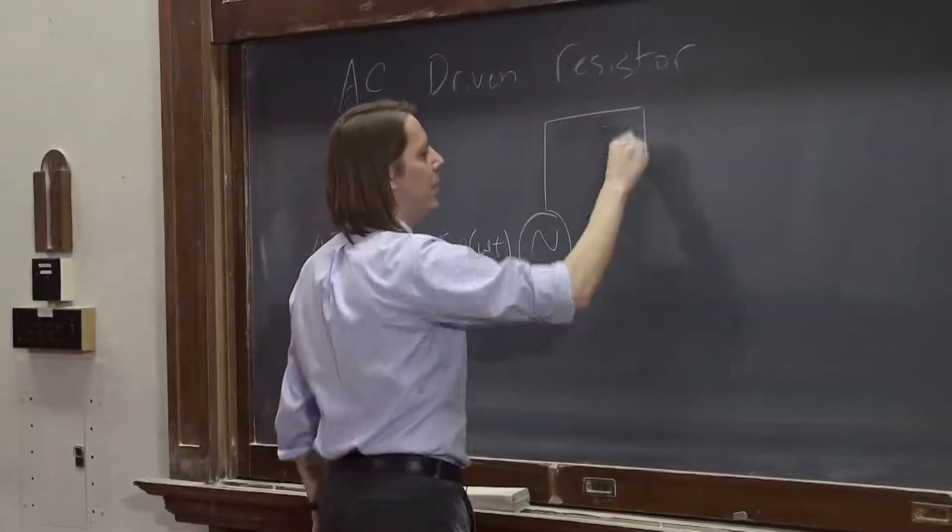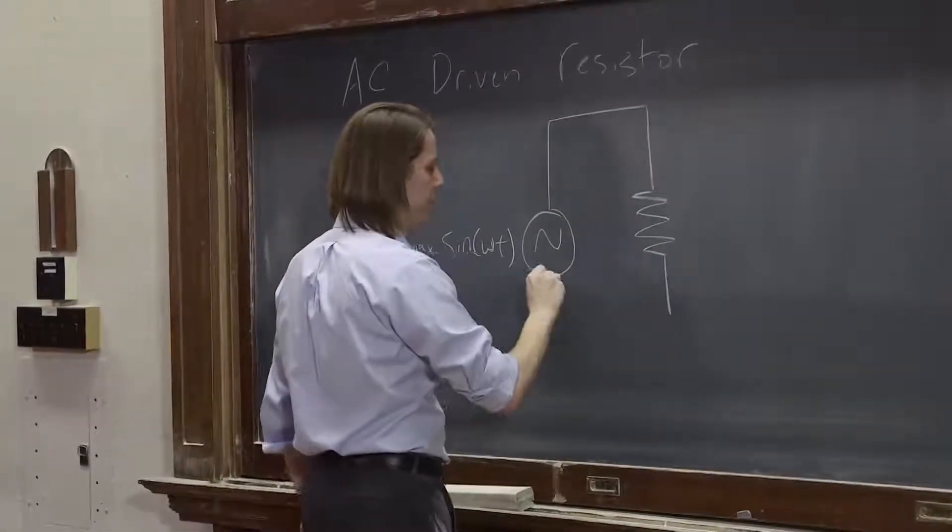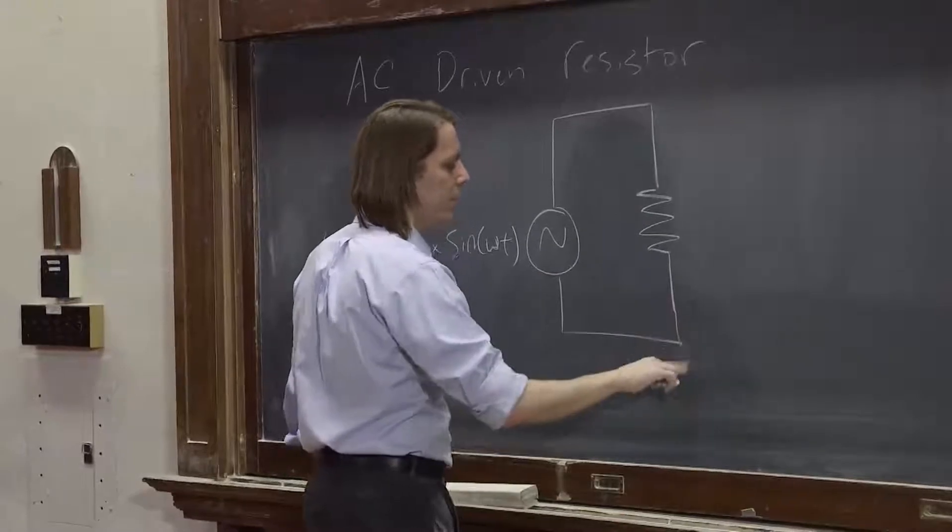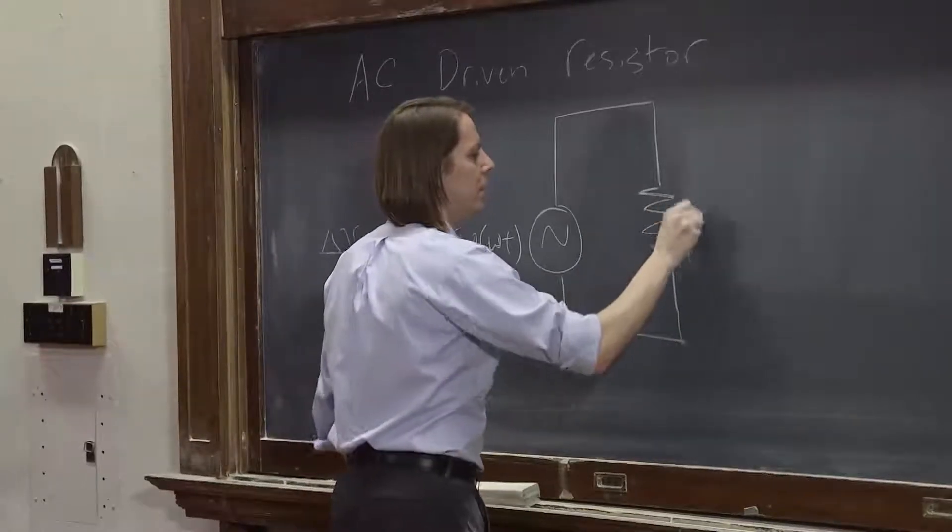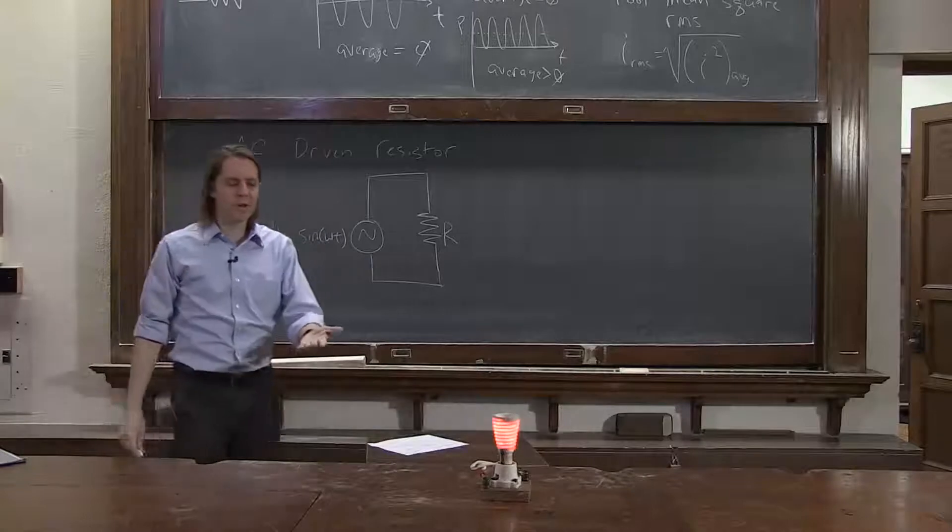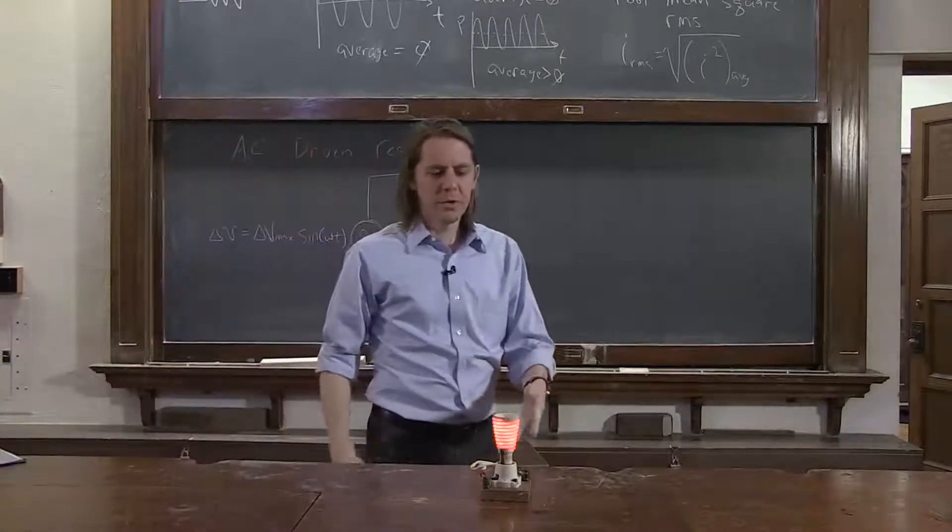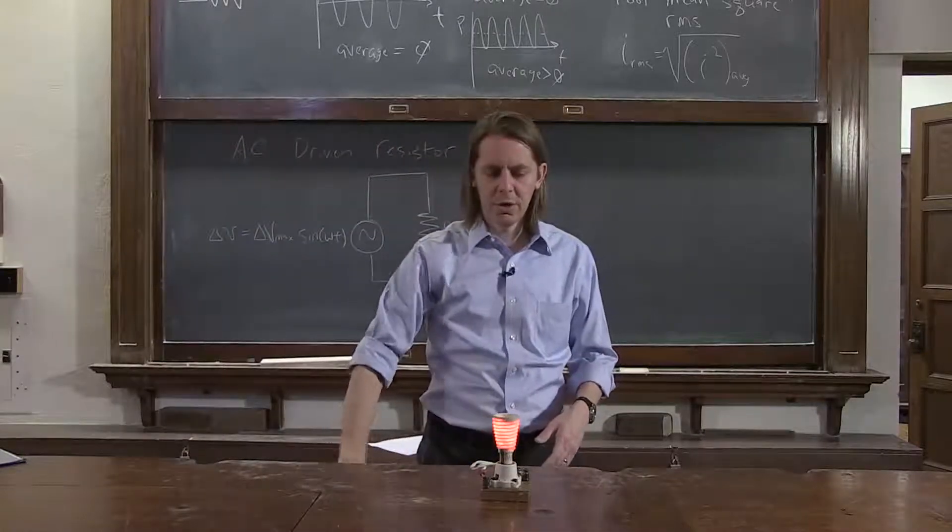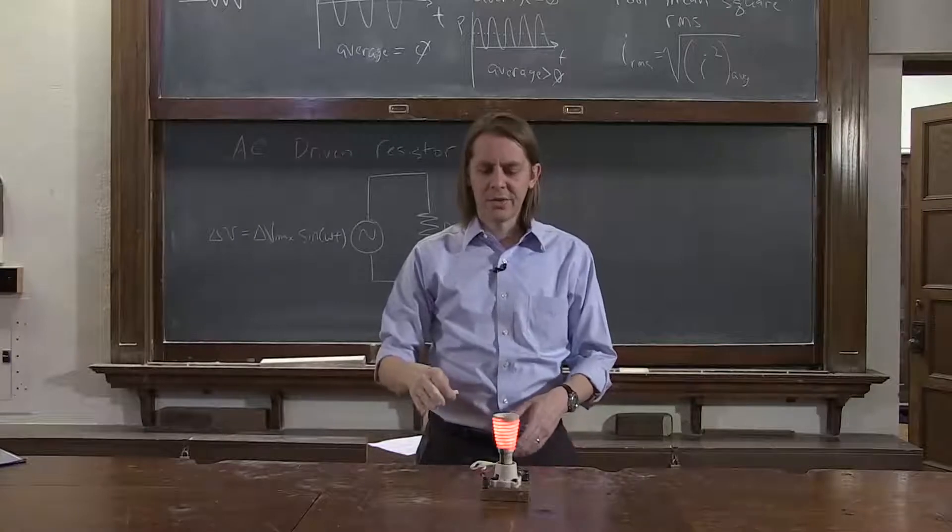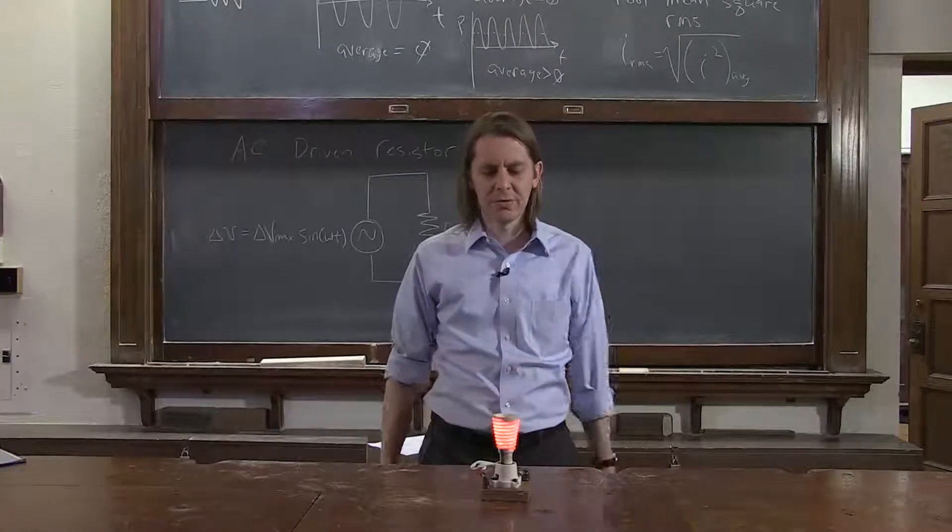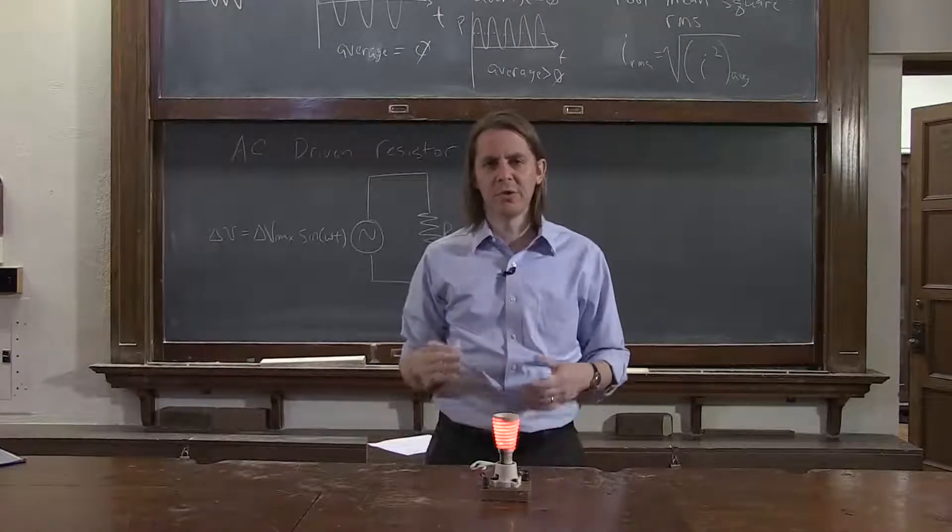And then it goes up to a resistor. So the resistor is simply being driven by an AC power supply, which is exactly what we have here. So here we have the wall applying an oscillating delta V at about 60 hertz, 115 volts, to the nichrome wire, which is just a resistor.